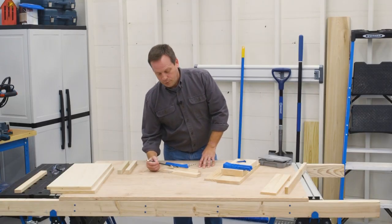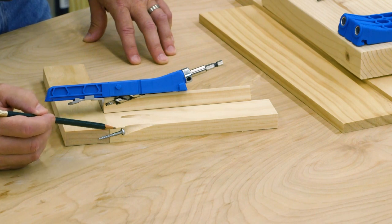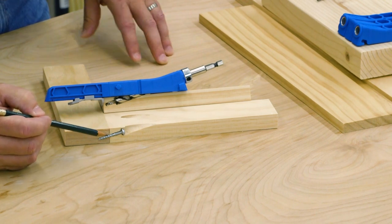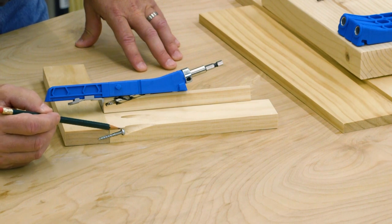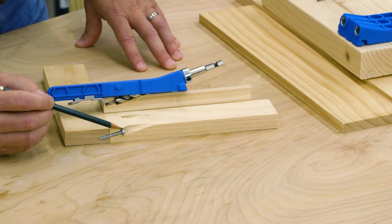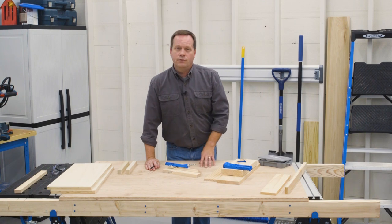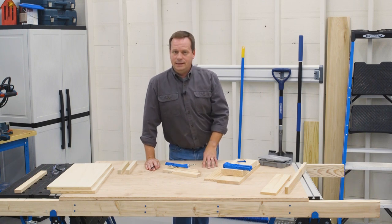This creates a perfectly formed pocket with three parts: the main pocket itself, the pilot hole that guides the self-tapping screw at the proper angle, and the flat ledge that matches the flat underside of the screw head to pull the joint together tightly.